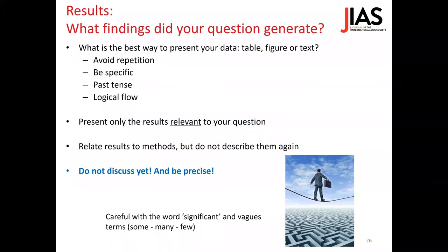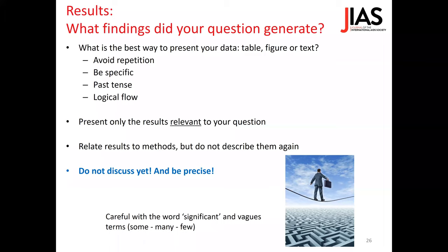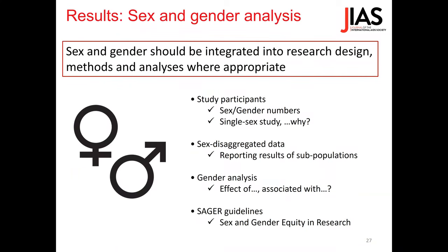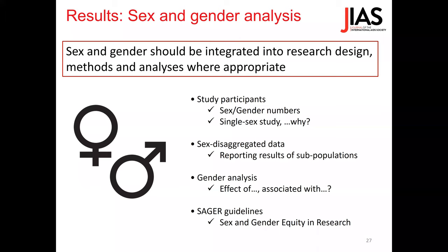Try to be precise. Be careful with vague words like 'some,' 'many,' or 'few.' You should also avoid the word 'significant' if something is not statistically significant. Very importantly, sex and gender should be integrated into research design, methods and analysis. The disaggregation is critical to benefit men and women. JIAS has a gender editorial policy to support gender considerations in science. Not knowing about sex differences may lead to less evidence-based medical practice, and aggregate results may mask important clinical differences, toxicity, or adverse effects.